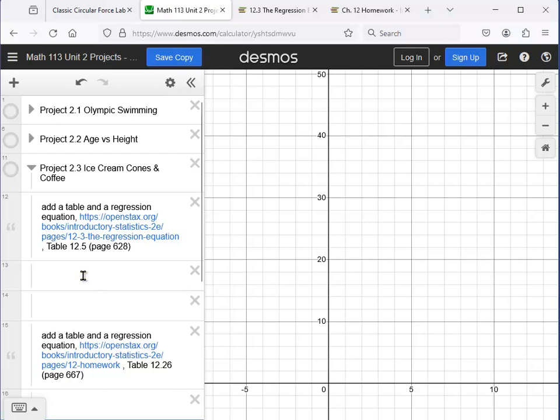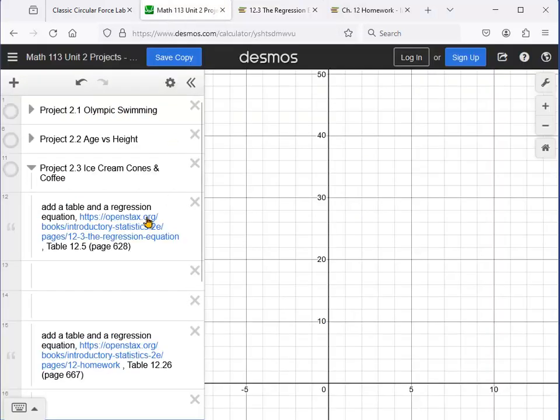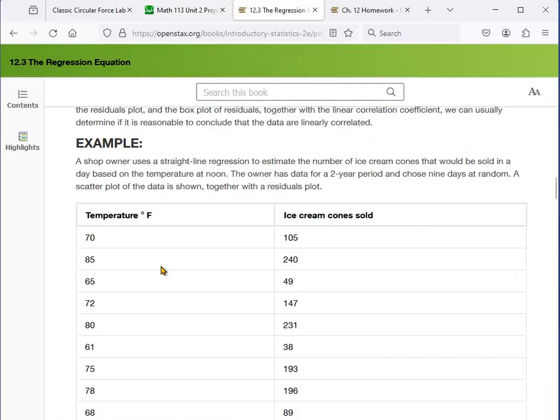Let me turn these off here - age versus height from the previous one. Here's ice cream cones and coffee. What I have here, these are two unrelated examples. They're both from that statistics textbook from OpenStax. Here a shop owner uses straight line regression - and by the way this one is posted here on the page. If you're downloading that whole book, the PDF for free, that's where it would be. Otherwise it's Table 12.5 respectively, or 12.3.